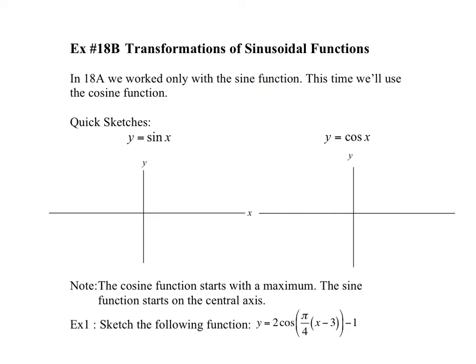All the transformations are the same. We'll just do a quick sketch of the sine function again — just one period. The sine function starts on your central axis, finishes in a period of 2pi, starts in the positive y values, goes back to 0 at pi, and then goes to negative values to 2pi.